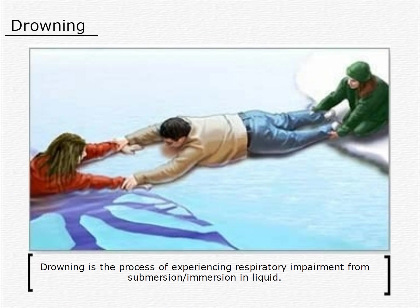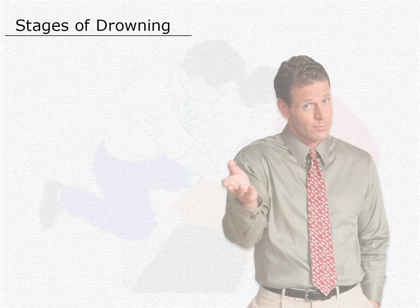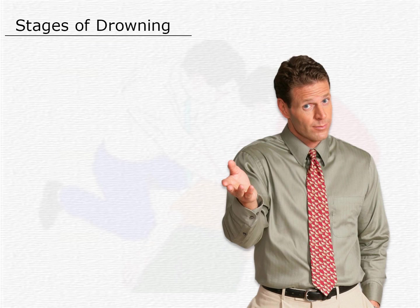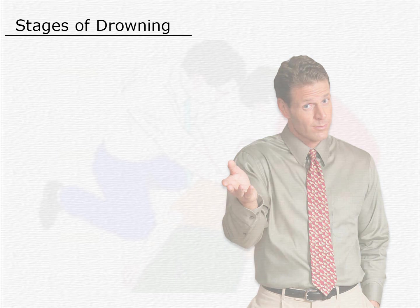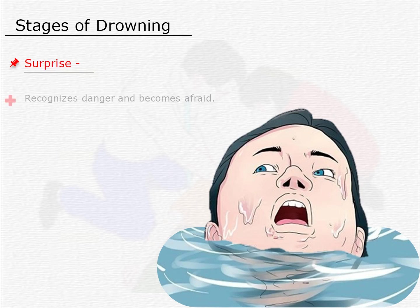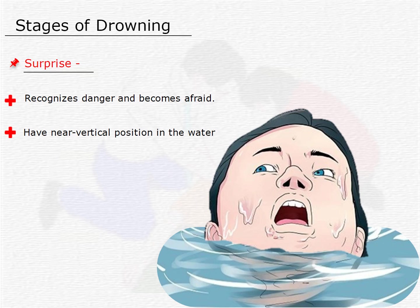Drowning is the process of experiencing respiratory impairment from submersion or immersion in liquid. The possible outcomes of drowning can include death. Most drowning victims don't yell or wave their arms to alert someone that they are in trouble. They are in a state of shock and are often silent. There are typically five stages to drowning. The first stage is surprise. The victim recognizes danger and becomes afraid, assuming a near vertical position in the water with little or no leg movement. The arms will be at or near the water's surface, making random grasping or flipping motions. The head will be tilted back with the face turned up. Victims rarely make any sound — they are struggling just to breathe.